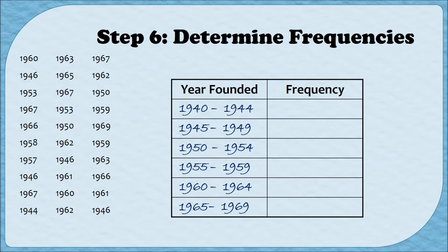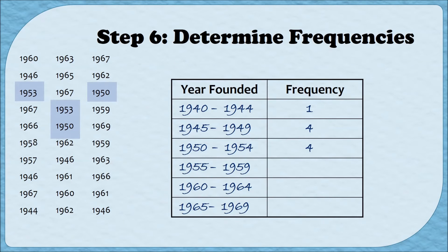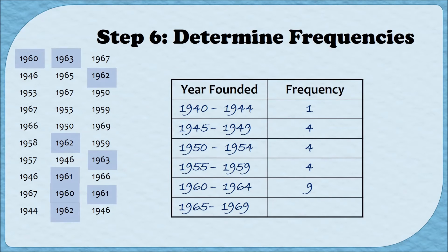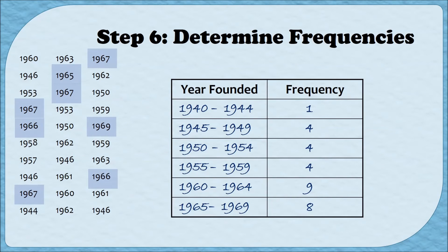The last step is to count the frequency for each category, just like we did for other frequency distributions. For the first category from 1940 to 1944, there was only one year. For 1945 to 1949, there were four years. For 1950 to 1954, also four years. From 1955 to 1959, four years. From 1960 to 1964, nine years. And from 1965 to 1969, eight. You can do a quick check by adding all frequencies together — that should equal your sample size. And that's how you create a grouped frequency distribution.